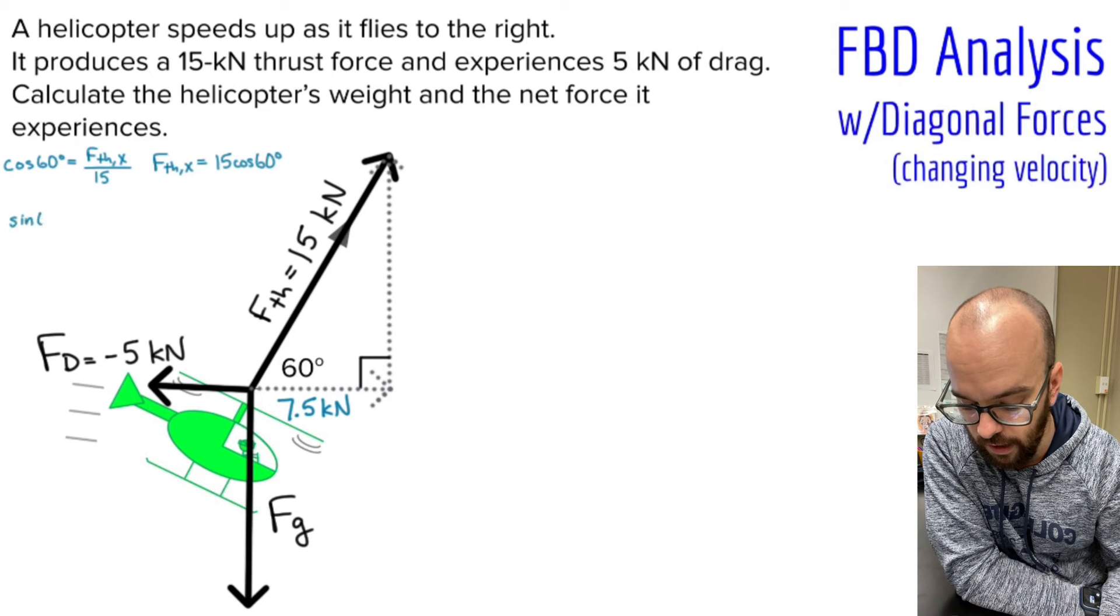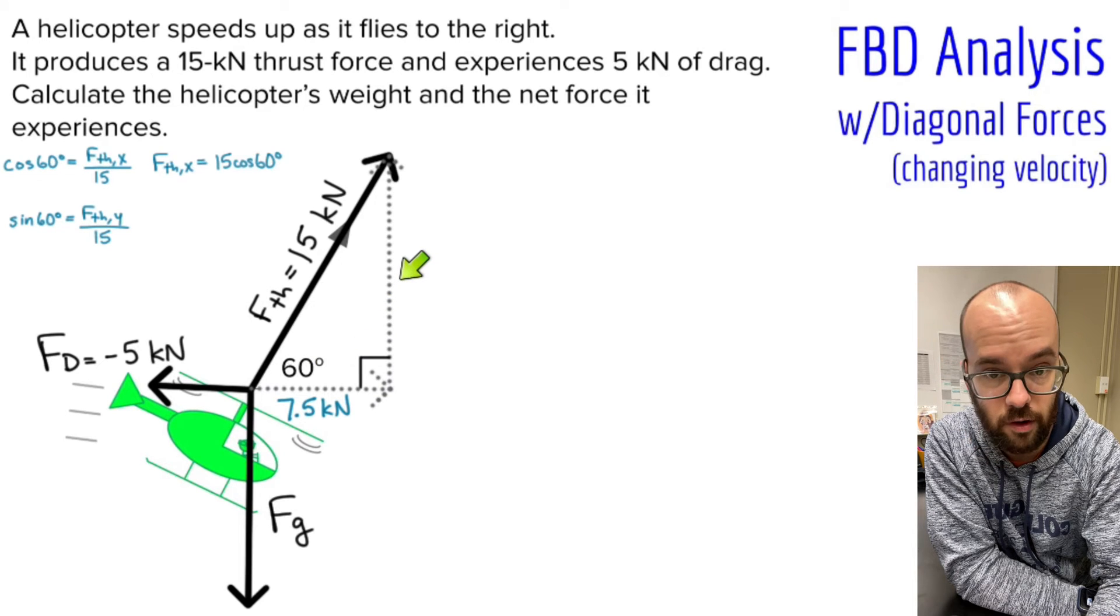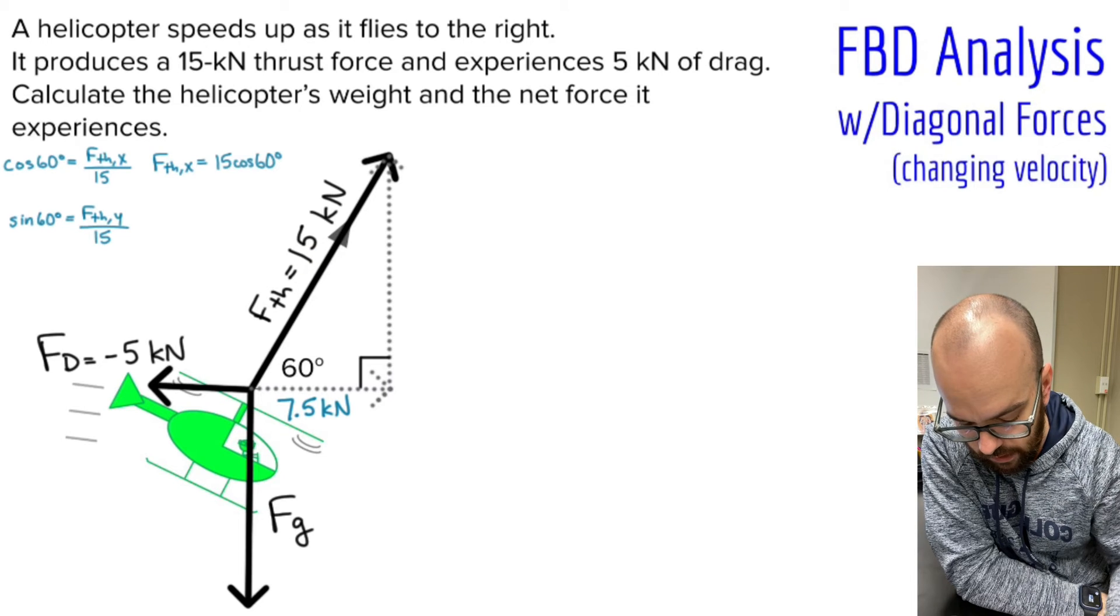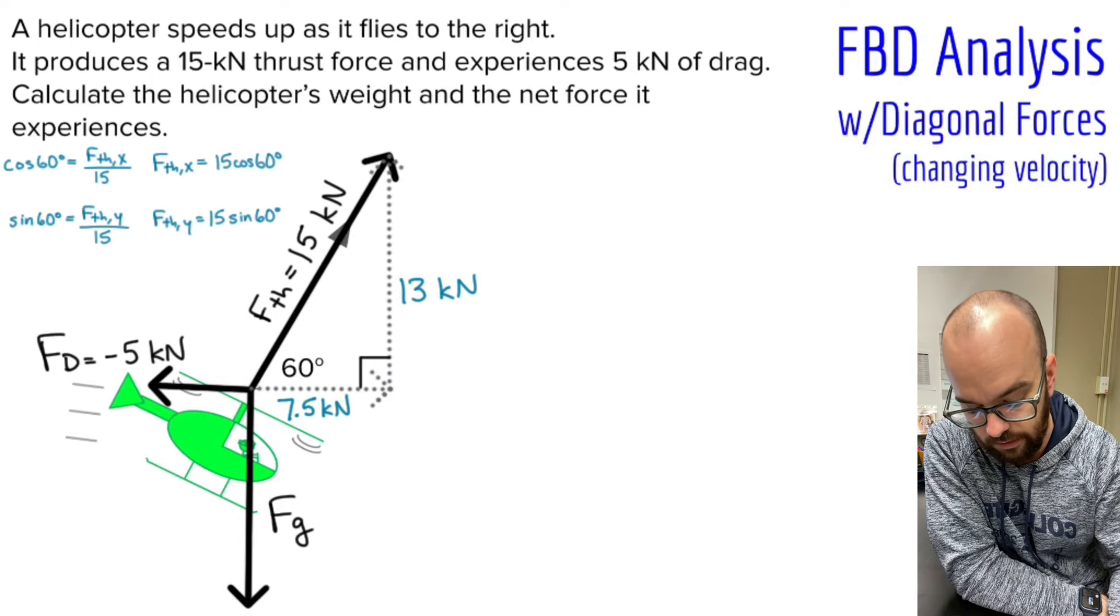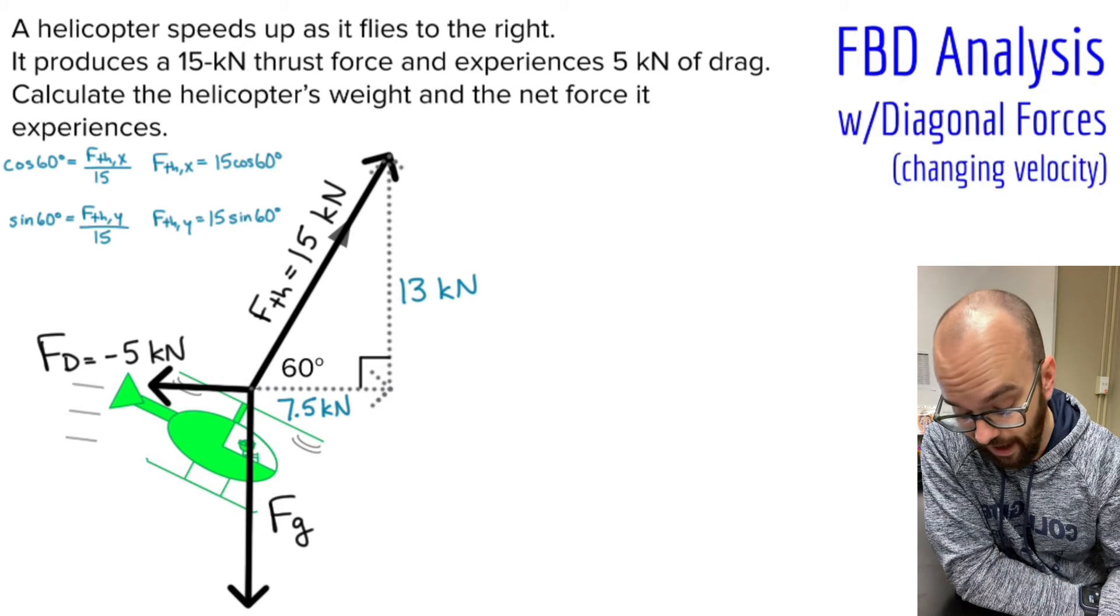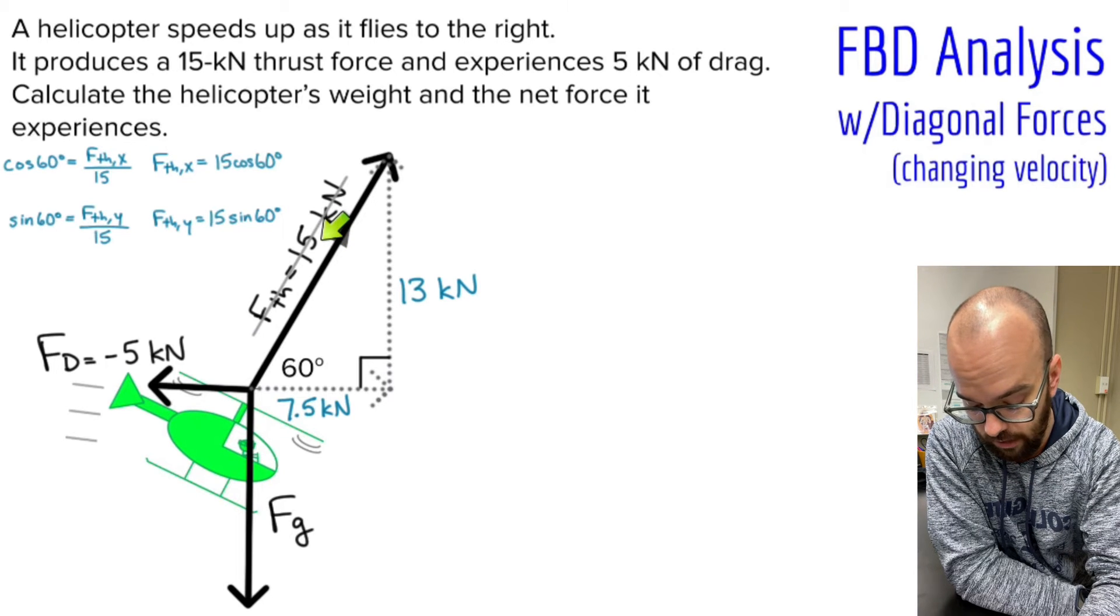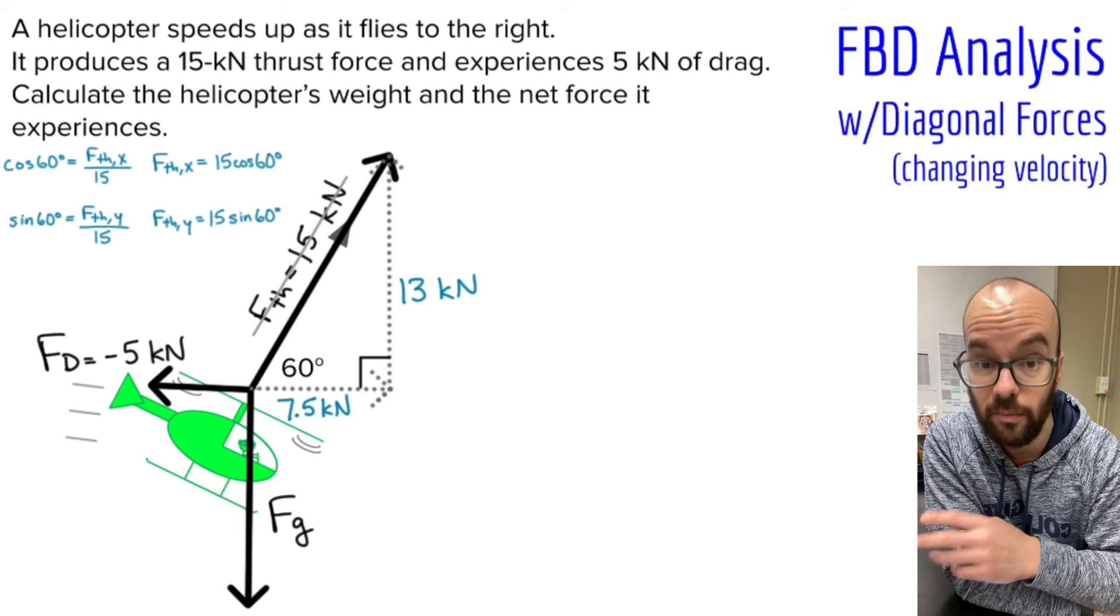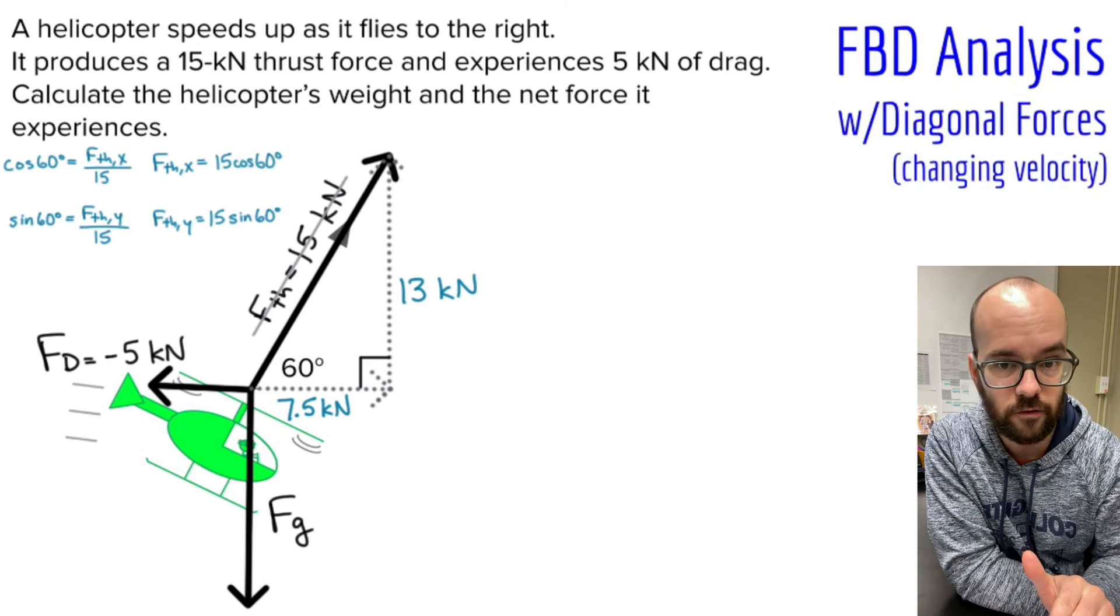Then I'll use sine to find the vertical component. Sine of 60 degrees equals opposite, which would be force of thrust in the Y or vertical direction, over my hypotenuse of 15. Solve that for FTHy, and I get 13 kilonewtons. Now at this point, since I've resolved that diagonal force into its components, I will no longer need that 15 kilonewtons value. In fact, I'm going to cross it out on my diagram so I don't accidentally try to add it to something later. We've resolved that into the 7.5 and the 13, so we don't need the 15 anymore.